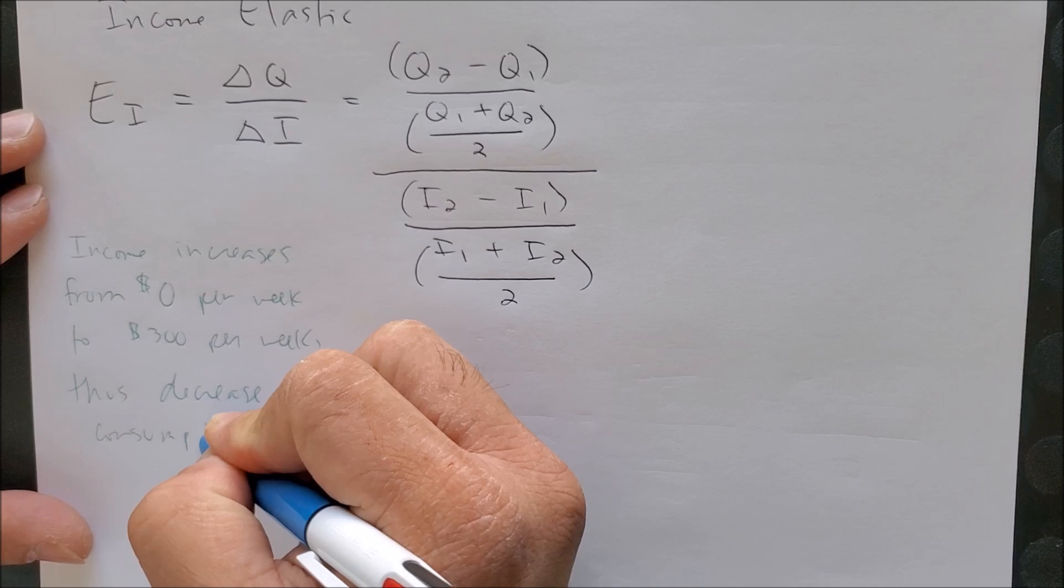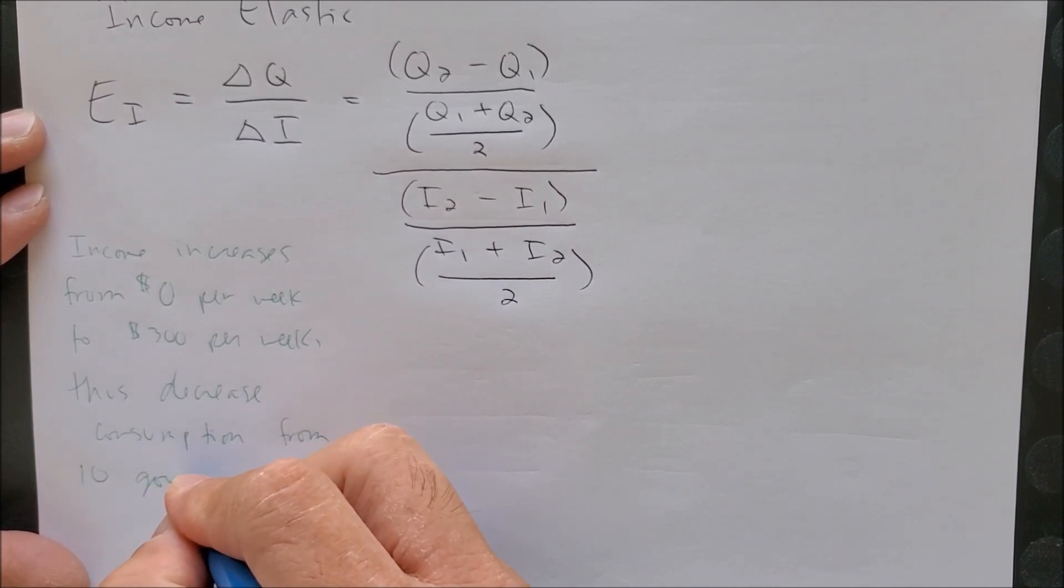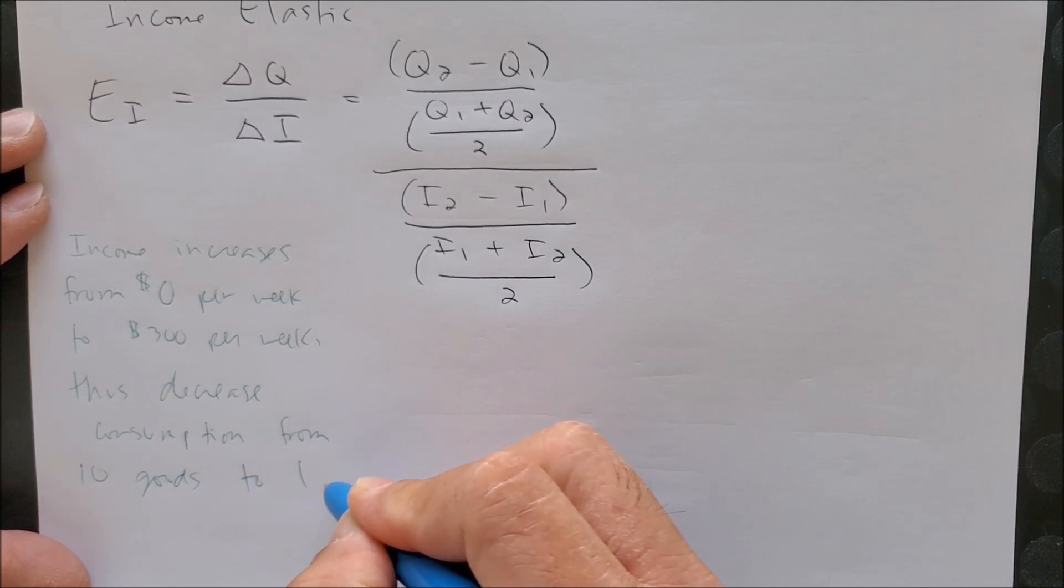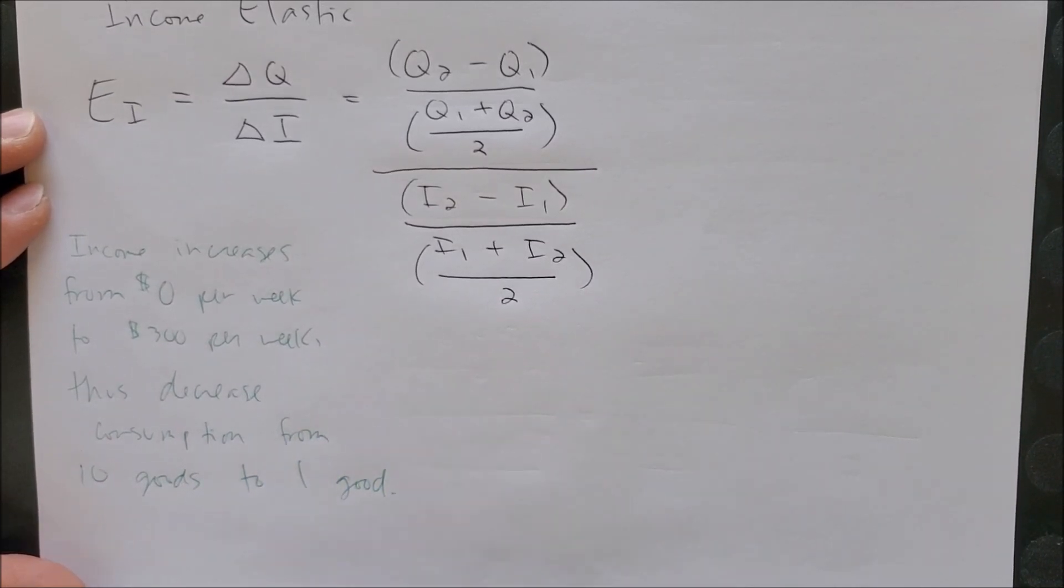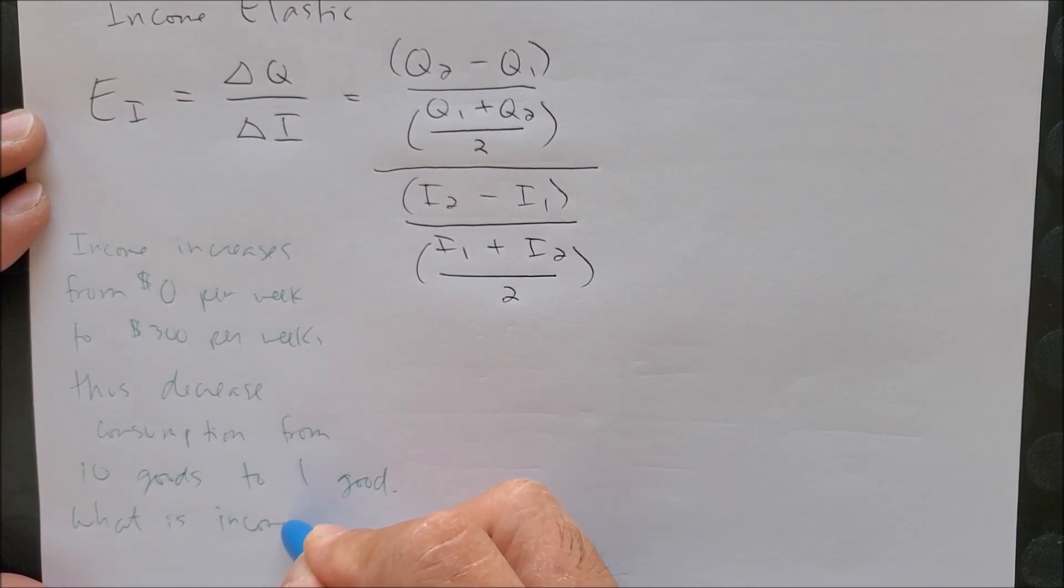from 10 goods to one good. What is the income elasticity?